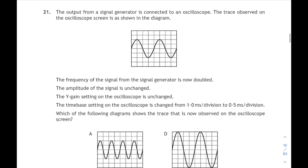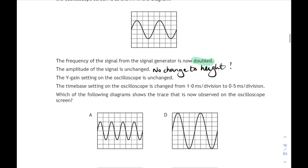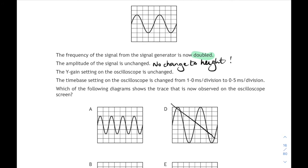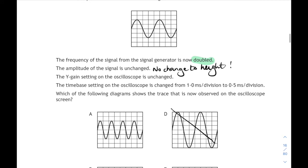Question 21. We're still on AC electricity. The trace observed on an oscilloscope screen is shown in the top diagram. We're told the frequency doubles, the amplitude is unchanged, and the Y gain setting is unchanged, and the time-based setting is changed from one millisecond per division to half a millisecond per division. Which of the following diagrams would show the trace that's now observed on the screen? Well, if the frequency is doubled, that means you would get twice as many waves on the screen. The amplitude is unchanged, so there's going to be no change to the vertical height because the Y gain setting is also unchanged. So option D is going to be out right away because the height has changed on that one. So that's definitely not the answer.